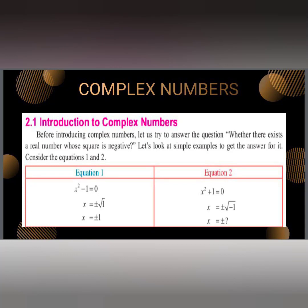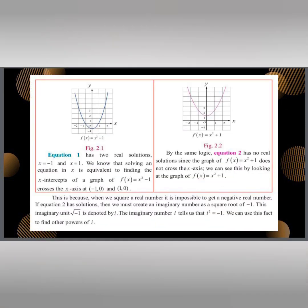Let us see the basic concepts of complex numbers. We have two equations: x squared minus 1 equal to 0, which gives the solution x equals plus or minus 1. Consider the second equation x squared plus 1 equal to 0, which gives x equals plus or minus root of minus 1. We can see that the graph of f(x) = x squared minus 1 crosses the x-axis at two points, meaning it has a solution. But for the second equation, we cannot find the solution because when we square a real number it is impossible to get a negative real number.